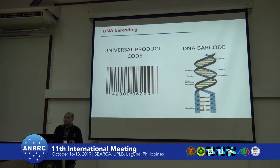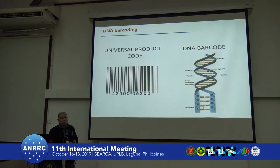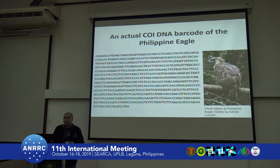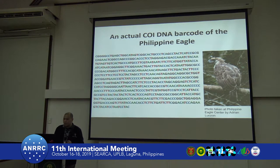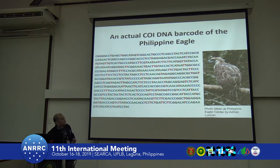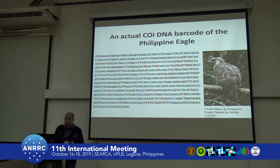A DNA barcode, or DNA sequence, can act like a universal product code. Through these specific sequences, we cross-reference them against the database. One of the earliest sequences we obtained for the Philippines was that of the Philippine Eagle, way back in 2010. This is an actual COI barcode that we have submitted to the database.